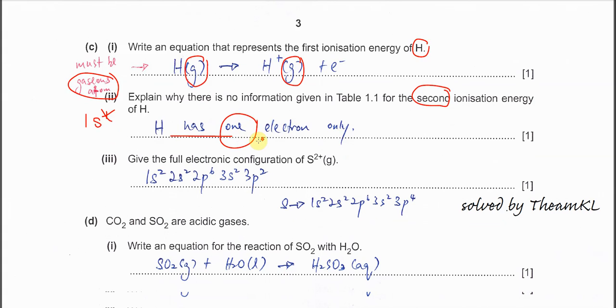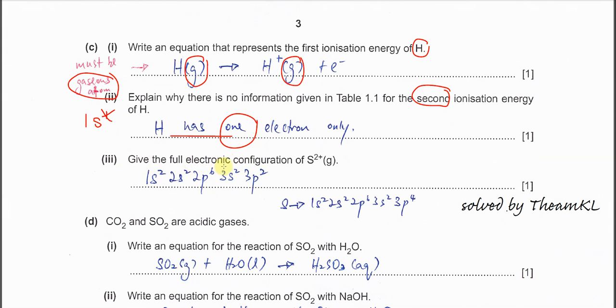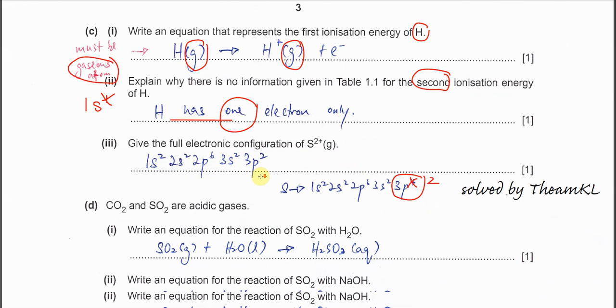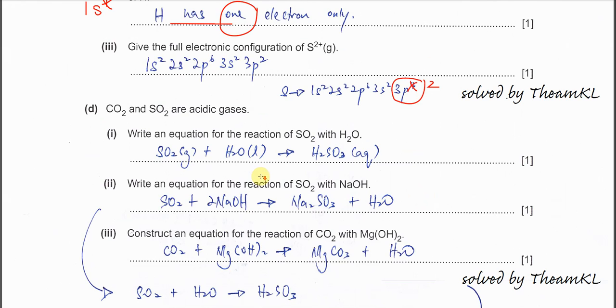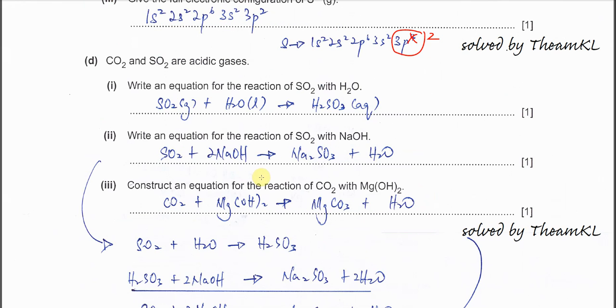Part C(iii): Give the full electronic configuration of S²⁺. First, know sulfur's electron configuration: 1s²2s²2p⁶3s²3p⁴. Electrons are removed from 3p⁴ - two electrons removed, two remain. It becomes 1s²2s²2p⁶3s²3p². Part D: Carbon dioxide and sulfur dioxide are acidic gases.